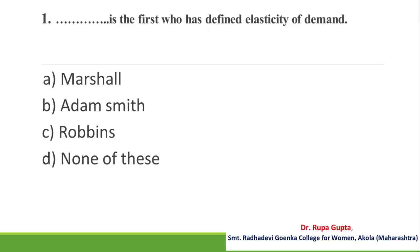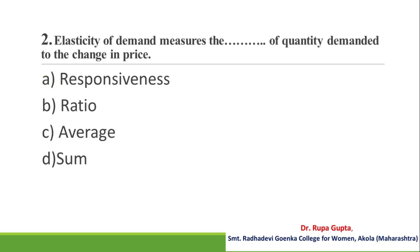Question number 1: Who has defined elasticity of demand? A. Marshall, B. Adam Smith, C. Robbins, D. None of these. And the correct answer is A, Marshall.